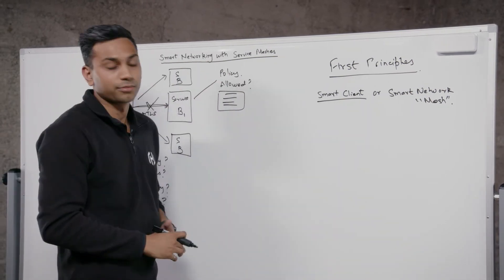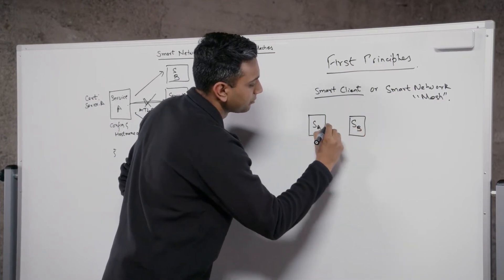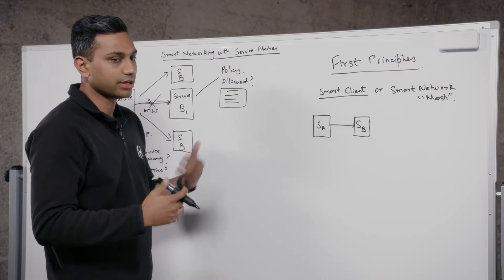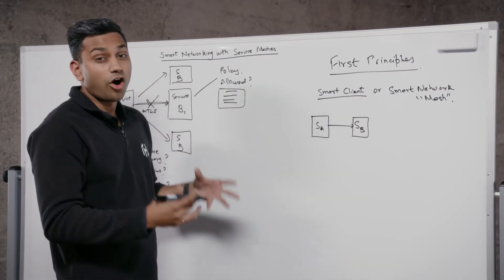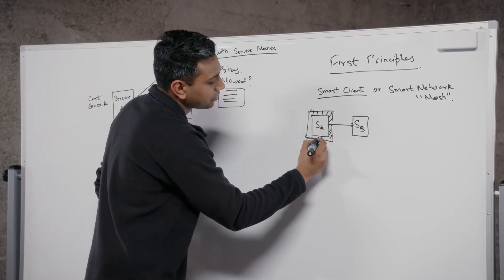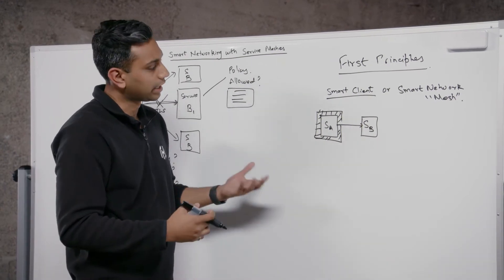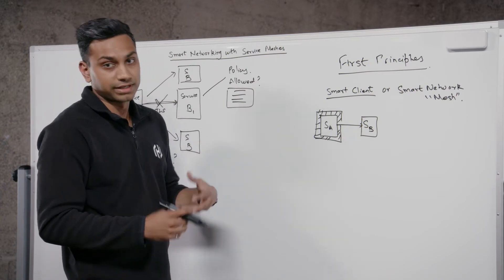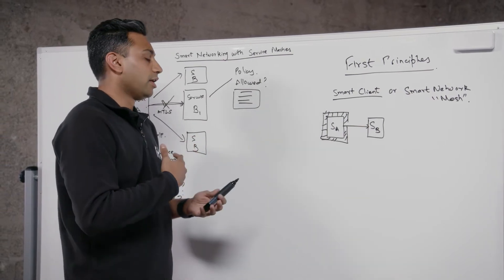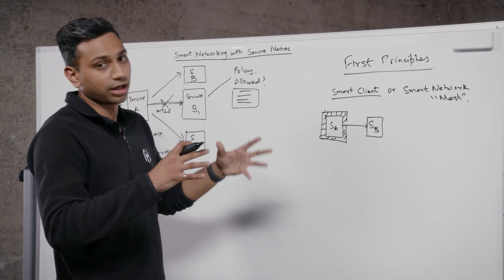Let's explore the smart client approach. In the smart client approach, we have service A and service B, very similar to the example before. All the smarts that come with service-to-service communication — circuit breaking, retries, traffic shaping, and things like that — are all built into the code base for service A. Service A contains everything it needs to do the service call. This might be achieved using a set of libraries — a Java library or a Golang library. Overall, the system is easy to reason about because everything you're seeing over the network, the type of calls you're making, they're all defined in code.